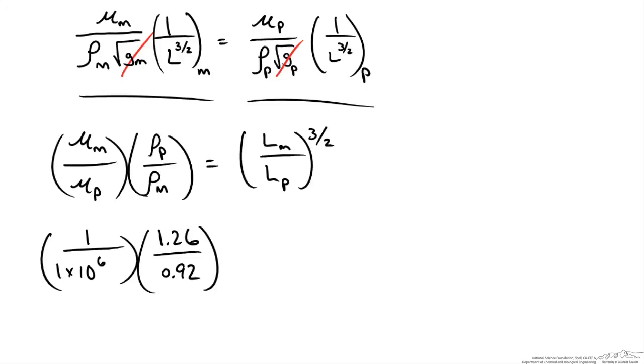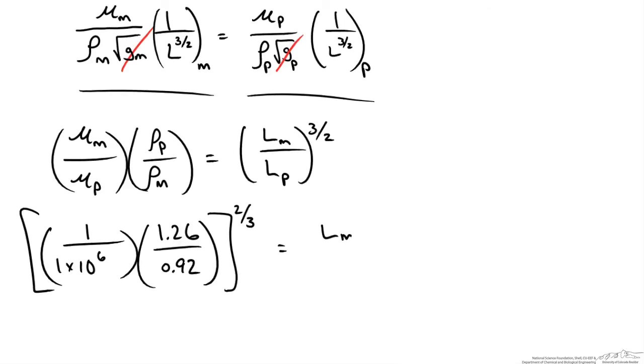So now if we take this to the 2 thirds we will get the relationship between our model length and our prototype length. If I do this calculation I get 1.23 times 10 to the minus 4. So now we have an idea of our length scales.